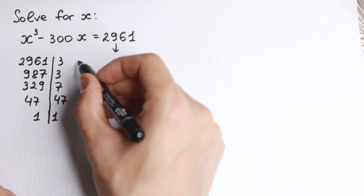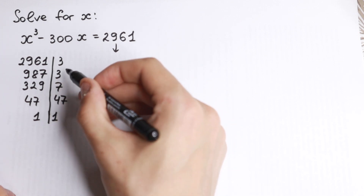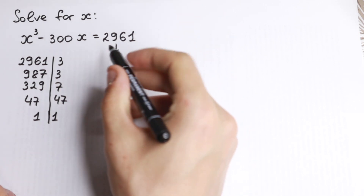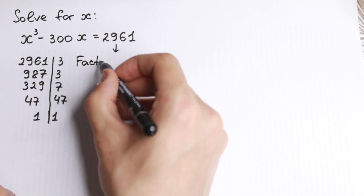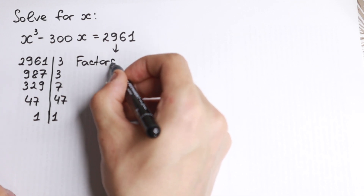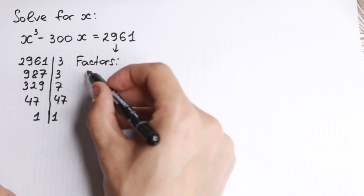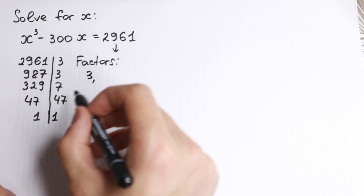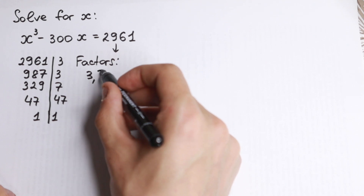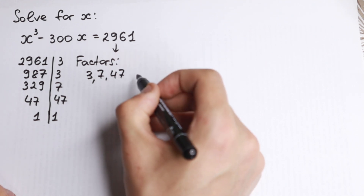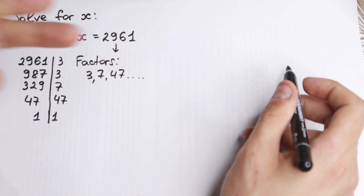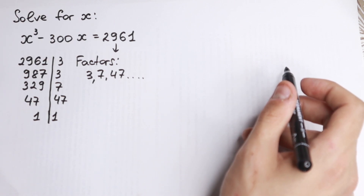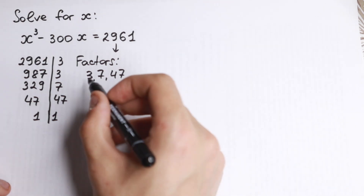What factors do we have? We have 3 twice, so the factors are 3, 7, and 47. Let's check if these factors are roots of our equation.